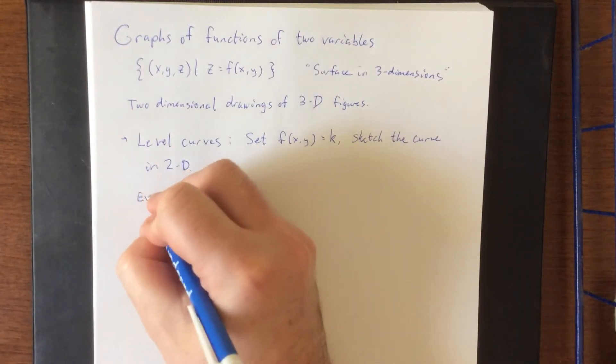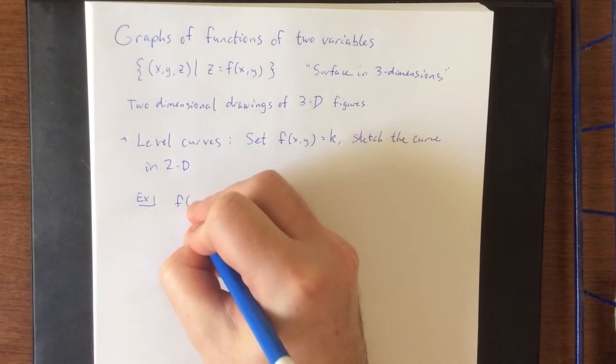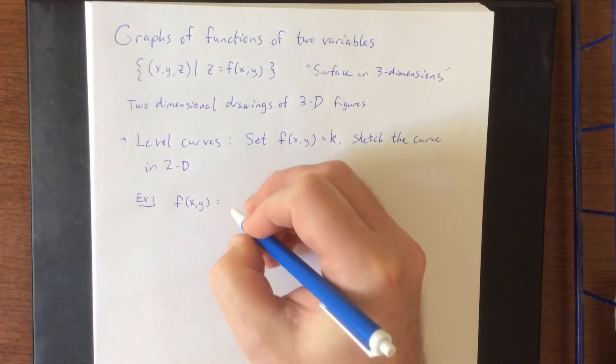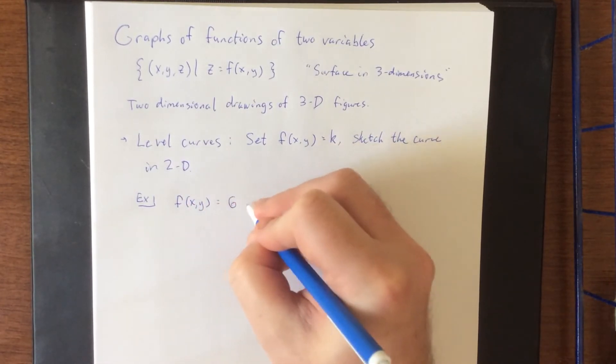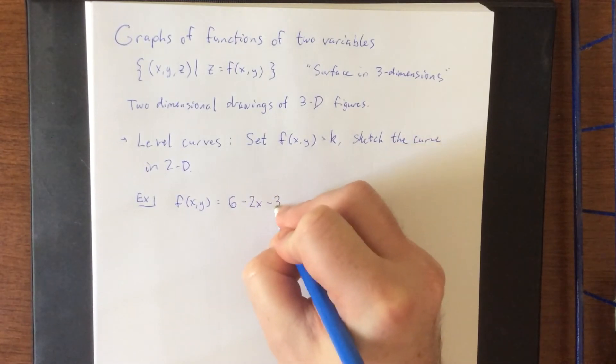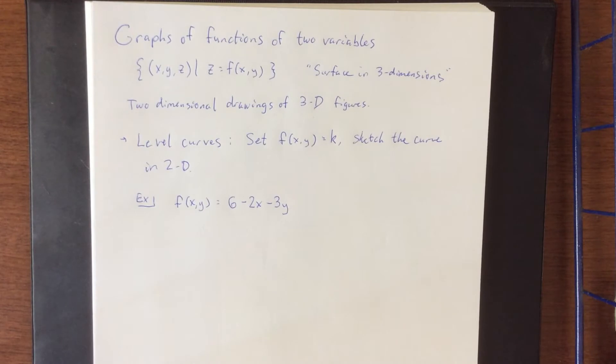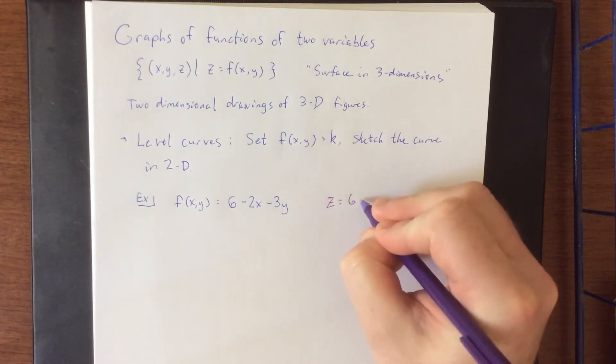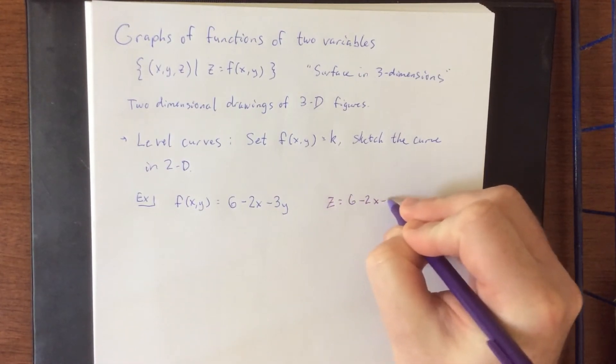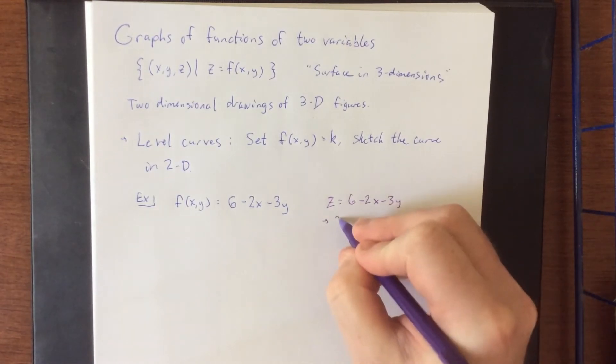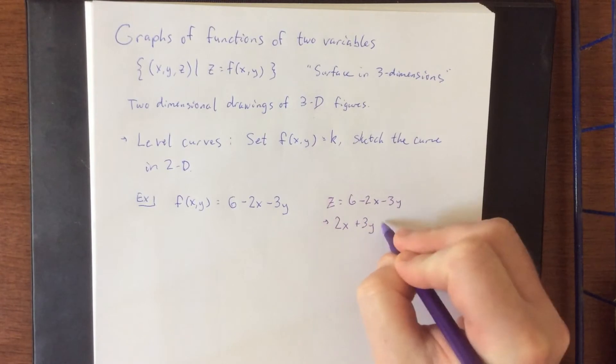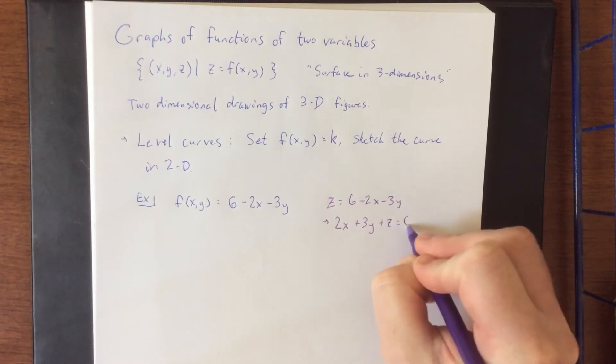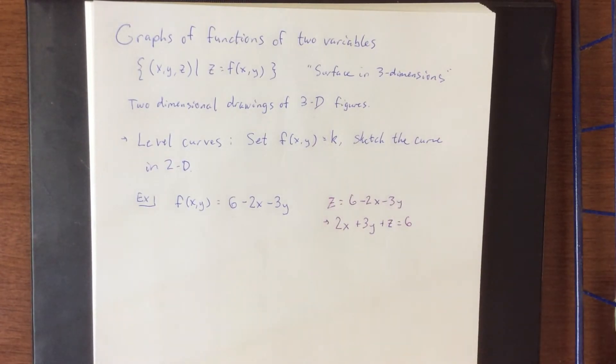So I'd like to try to demonstrate what that looks like. For example, let us consider f(x,y) is equal to 6 minus 2x minus 3y. Now just in case you didn't recognize it immediately, this would be similar to saying that z is equal to 6 minus 2x minus 3y, or equivalently this would be 2x plus 3y plus z is equal to 6. We recognize that from a previous section as being the equation of a plane in three dimensions.